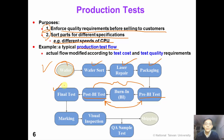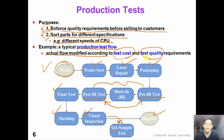Then we perform a final test and mark the IC according to their speed. Finally, we have a visual inspection and can sell them to our customer. A small amount of sampled ICs will be tested to assure quality — this is called a quality assurance test. In production test, test cost and test quality are the main drivers.